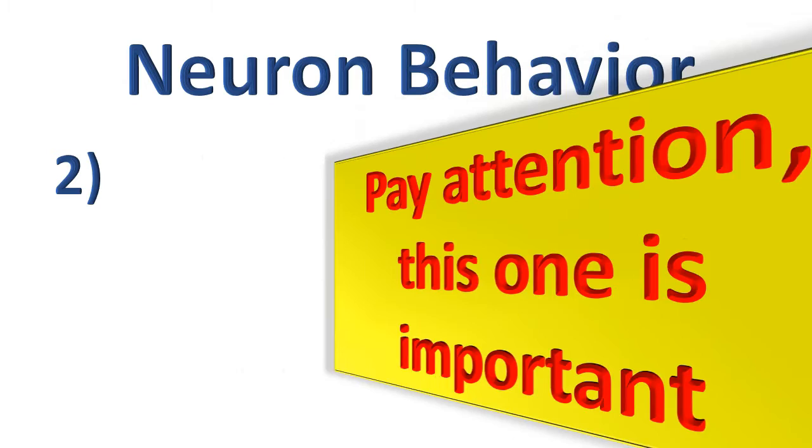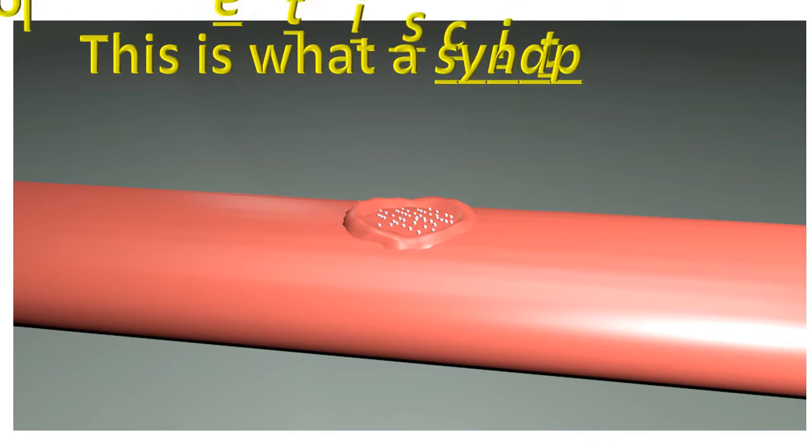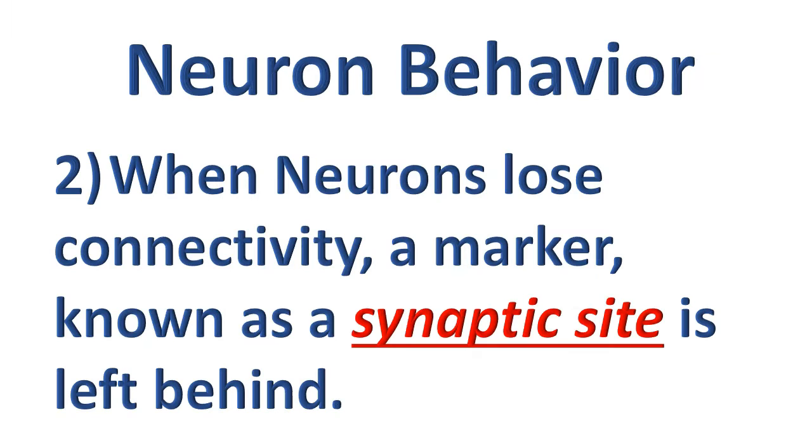The second point. Please pay careful attention to this one, it's important. When neurons lose connectivity with another neuron or another cell, they leave behind a marker known as a synaptic site. Leaving aside the limitations of artistically challenged authors, this is what a synaptic site looks like. Sort of. My goodness, that is easily one of the worst representations my circuits have ever beheld. Fortunately, the image has enough similarity to the real thing that we can still get the idea across.